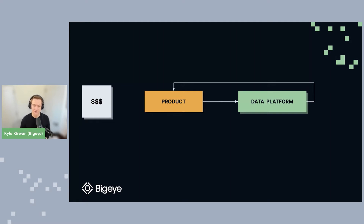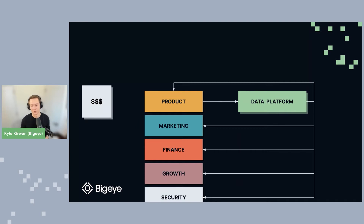But they're not the only team that's going to use that data. We also have a whole bunch of other teams at the company also using the data platform - marketing, finance, maybe a growth team, maybe even a security team looking at all this data to make sure we don't have any compliance risk. The marketing team consumes information about the product to understand which campaigns to run or what features to work into those campaigns. Finance needs to know what product usage might look like, impacting how they plan for paid features.